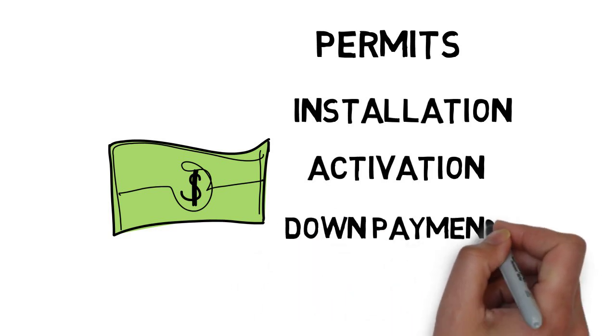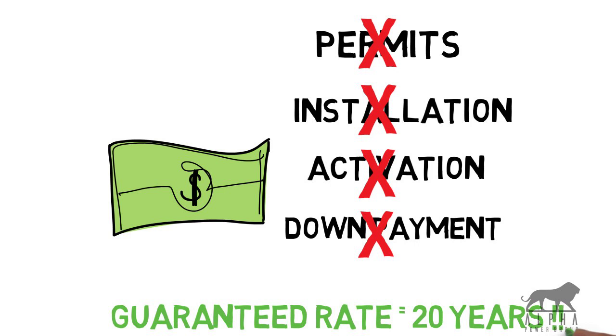The PPA, in a sense, simply becomes a cheaper rate plan, with a guaranteed rate and escalator for a fixed amount of time. The typical PPA term is 20 years.